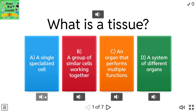What is a tissue? A: a single specialized cell. B: a group of similar cells working together. C: an organ that performs multiple functions. D: a system of different organs.